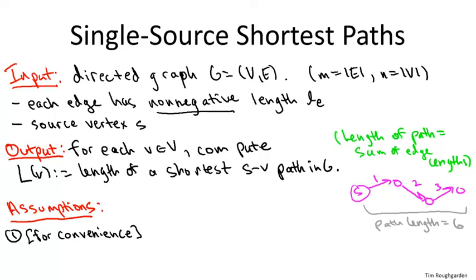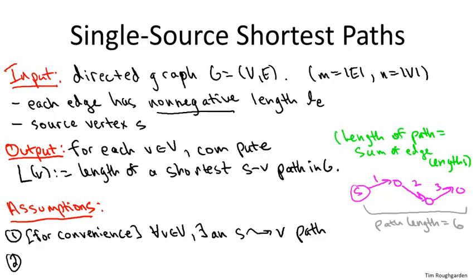To keep it simple, think of the input graph as one where you can get from S to V for every vertex V, and the challenge is: amongst all the ways to get from S to V, what is the shortest? The second assumption already appears in the problem statement, but I want to reiterate it. When we analyze Dijkstra's algorithm, we always focus on graphs where every edge length is non-negative. No negative edge lengths are allowed.